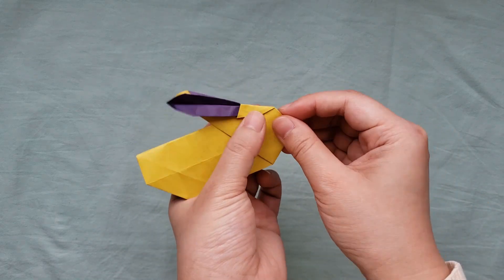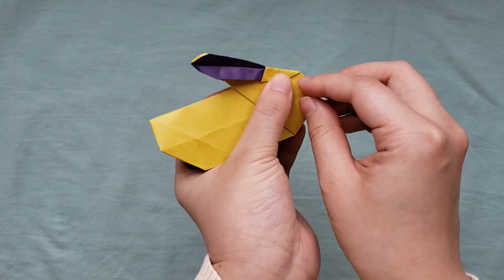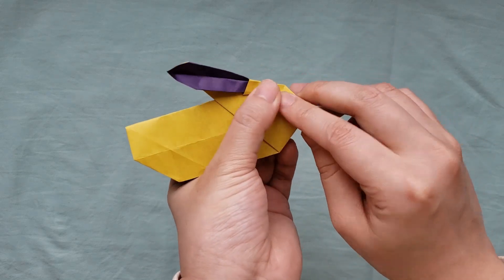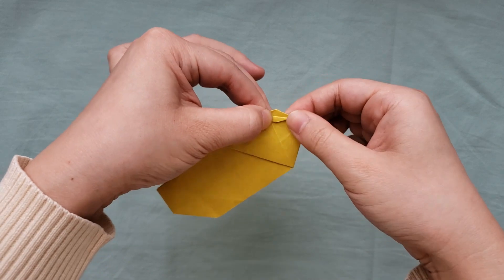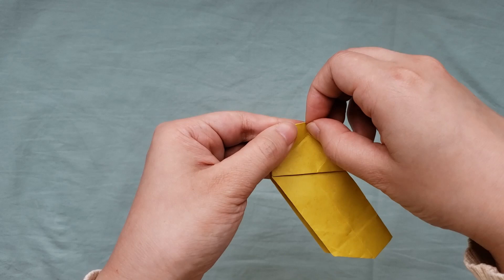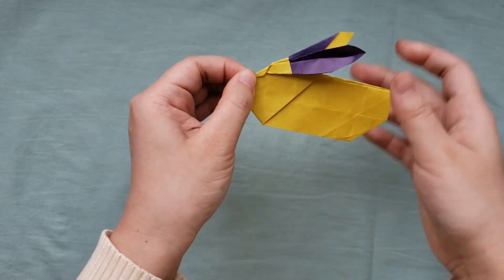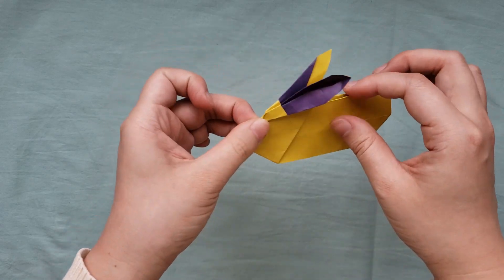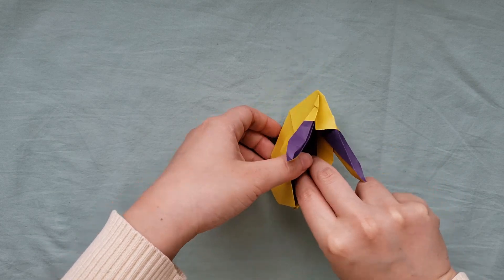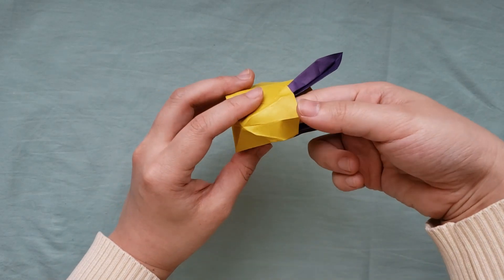Now make a tiny fold about halfway across the front to about halfway across the diagonal. And do the same on the other side. Gently open up the bunny. And you're done!